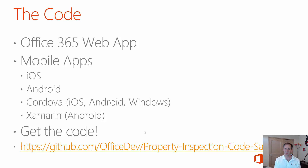Finally, we have a Xamarin version which we chose to target Android with. So if you want to learn how to code in Xamarin against Office 365, that one is a good reference for you as well. The code is available on GitHub. It's completely open source. You can download the sample, follow the instructions in the README to install it and get it up and running in your Office 365 Production Tenancy, and repurpose it for your own needs.